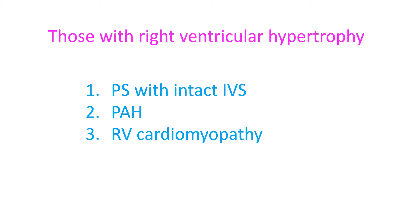In severe pulmonary arterial hypertension — primary pulmonary hypertension or other causes without equalization of ventricular pressures — pulmonary arterial pressures are often suprasystemic, and the right ventricular hypertrophy is severe enough to produce right atrial overload and prominent A waves in JVP.